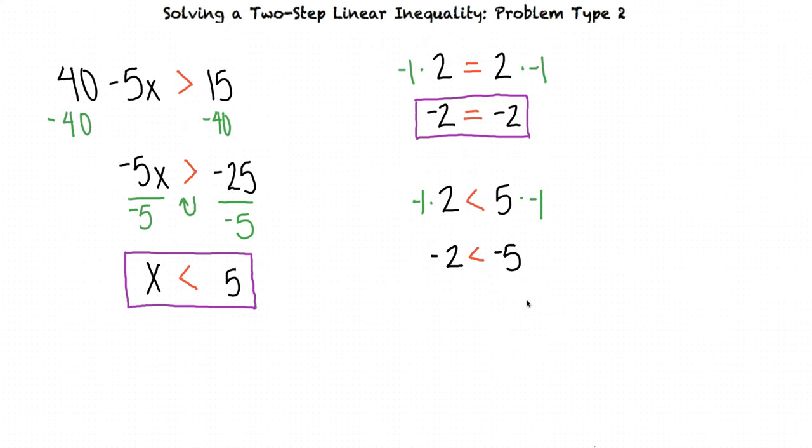This statement is not true because negative 2 is actually greater than negative 5 due to the fact that it is further to the right on the number line. Negative 5 is less than negative 2 because it is more negative than negative 2.